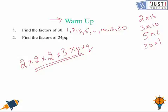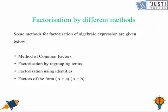We can find other factors of 24 as well and then multiply pq with them — that would also be a valid answer. Now we move ahead to our topic: factorization by different methods. We'll use four different methods in total, and today we're going to discuss the method of common factor and factorization by regrouping.